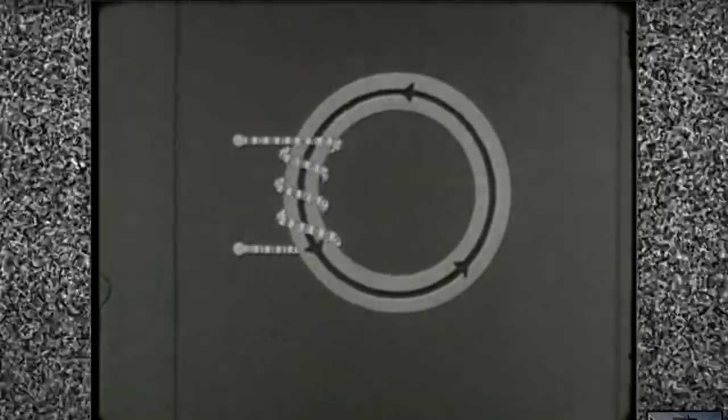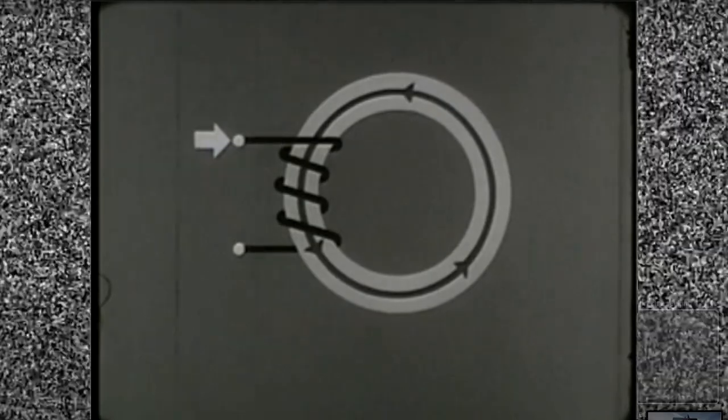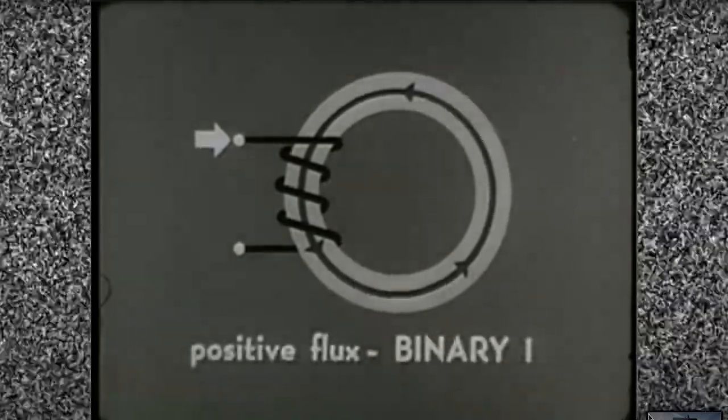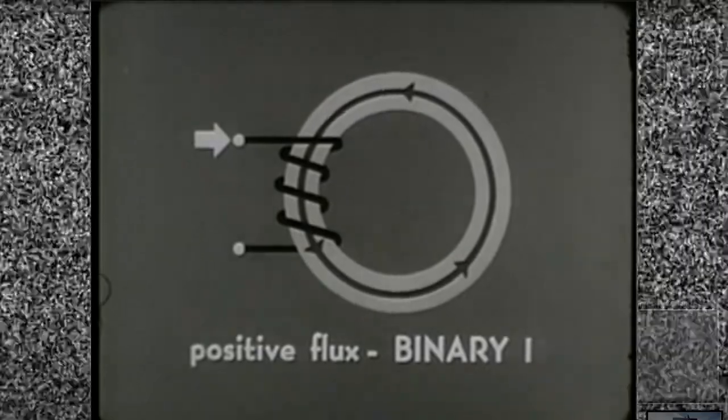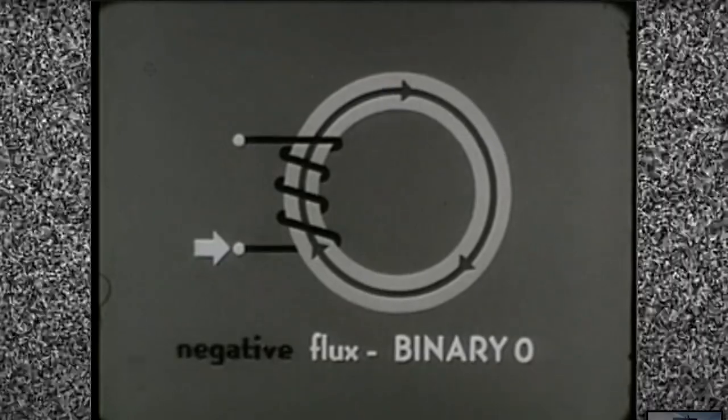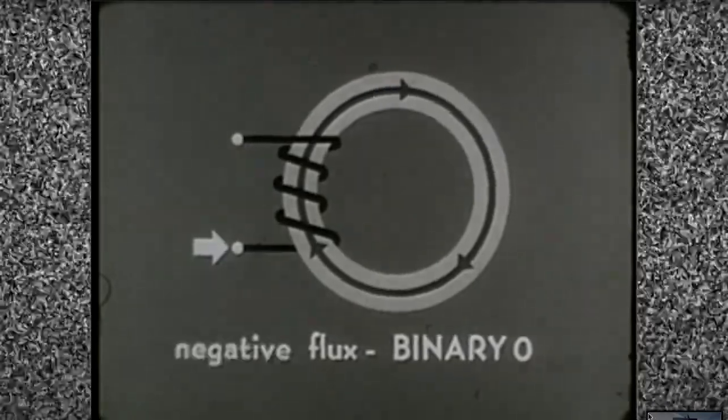The conductor here is wound so that current flowing in this direction produces a positive flux, setting the core in the binary one state. Current flowing in the opposite direction produces a negative flux, which sets the core in the binary zero state.